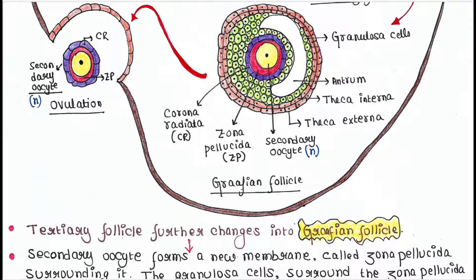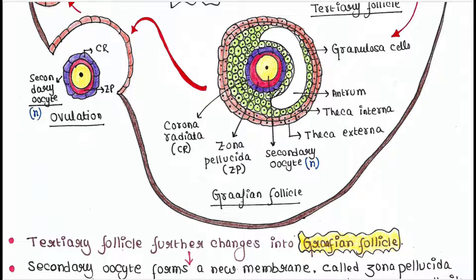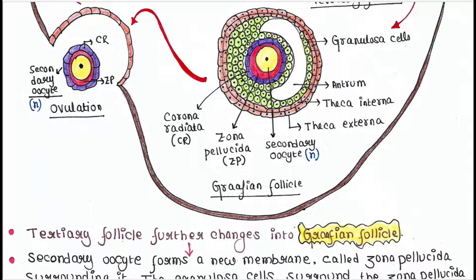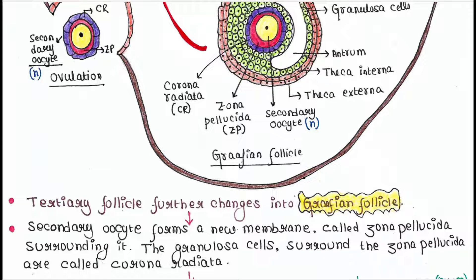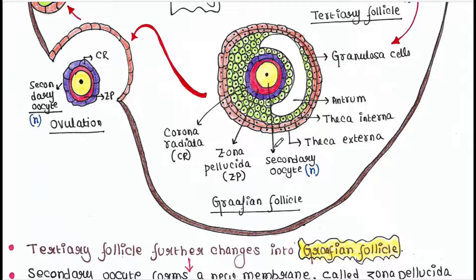The tertiary follicle further changes into the Graafian follicle. The secondary oocyte forms a new membrane called the zona pellucida surrounding it. The granulosa cells surrounding the zona pellucida are called the corona radiata. In the Graafian follicle, the granulosa cells, theca interna, and theca externa remain as before, along with the antrum. The zona pellucida is the red layer surrounding the secondary oocyte, and the corona radiata surrounds the zona pellucida. This whole unit is called the Graafian follicle.